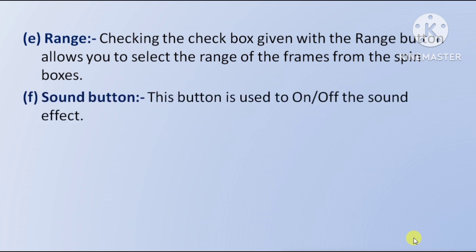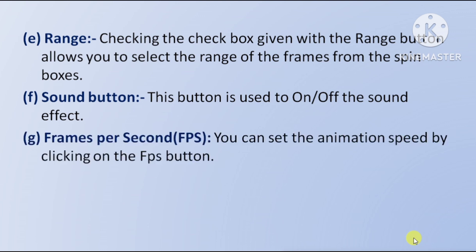Sound button: This button is used to turn the sound effect on or off. FPS (Frames Per Second): You can set the animation speed by clicking on the FPS button — aap FPS button par click karke animation ki speed ko set kar sakte hain.